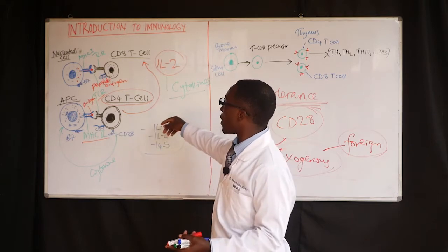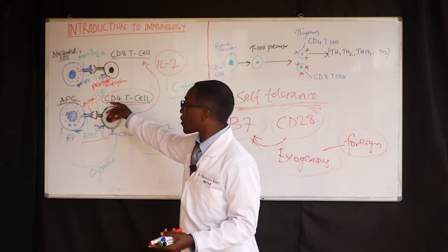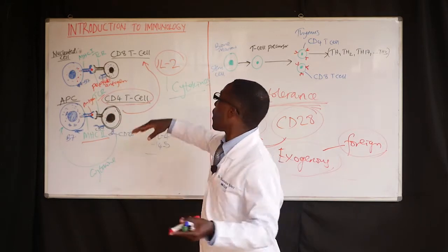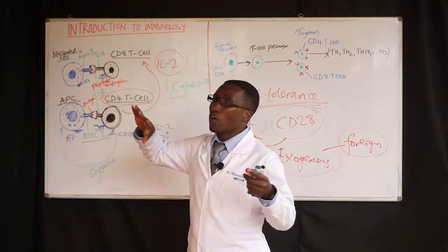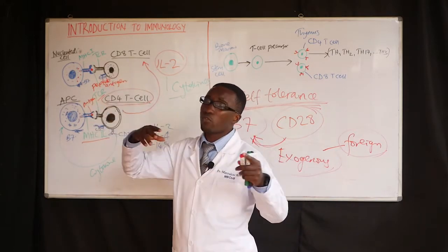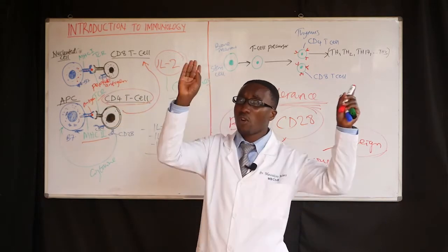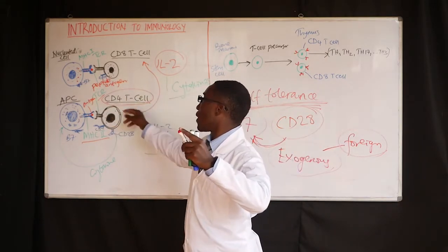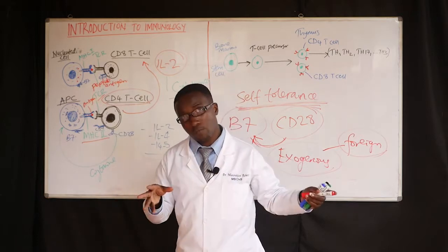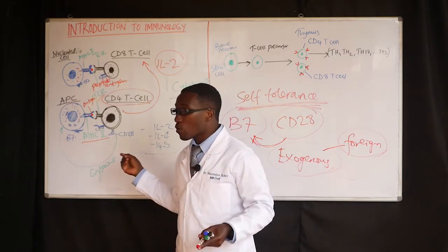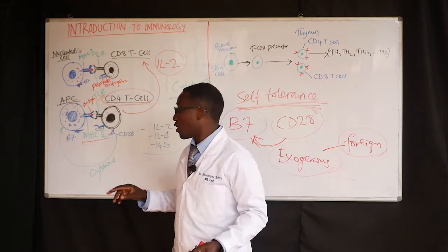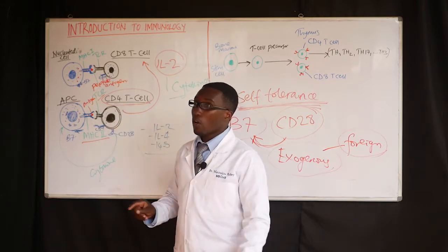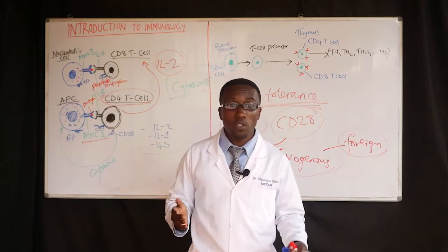Even if the APCs remain functional, our CD8 cells remain functional, our natural killer cells remain functional, and neutrophils — those that don't need to be activated by CD4 cells — remain functional. But in the presence of HIV infection, as these CD4 cells are depleted, we are going to remain without the commanders.